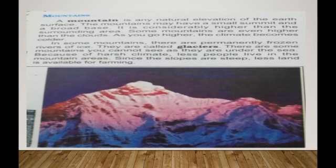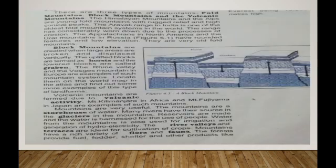There are three types of mountains: fold mountains, block mountains, and volcanic mountains. First, we will discuss fold mountains. The Himalayan mountains and the Alps are young fold mountains with rugged relief and high conical peaks.